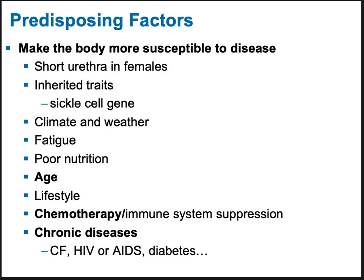Diabetes type one means the body doesn't make insulin and requires close monitoring of sugar levels. Other people develop type two diabetes, typically due to poor nutrition and lack of exercise — and they can make better lifestyle choices to even reverse diabetes completely. Any chronic disease definitely makes you more susceptible, as you've probably learned from the current pandemic.